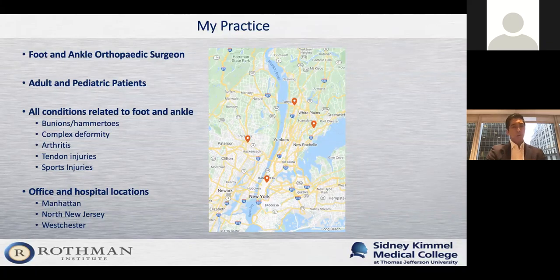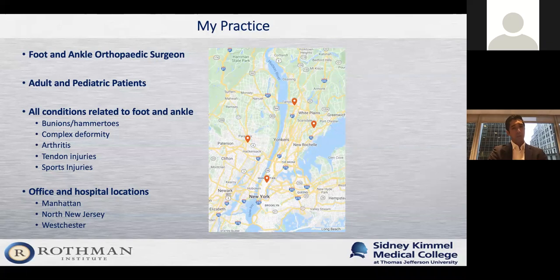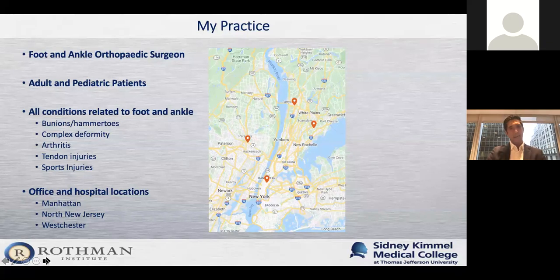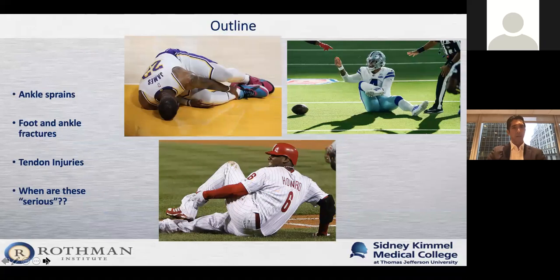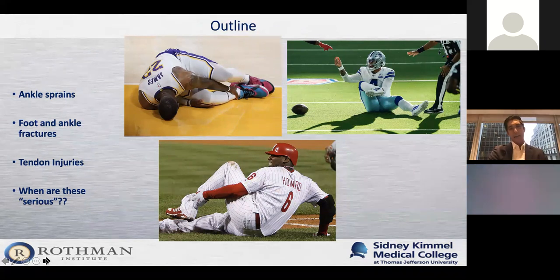This variety of conditions is part of what drew me to the field — from bunions and hammer toes to complex deformities such as flat foot or high arches, arthritis of the ankle and joints in the foot, as well as tendon and sports injuries, which we'll be talking about today. I see patients and operate in three different counties: Manhattan, Paramus New Jersey, and two office locations in Westchester — Tarrytown and Harrison.